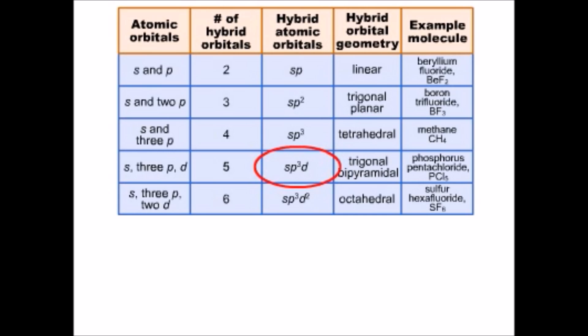Valence orbitals that are SP3D hybridized are arranged in a trigonal bipyramid, as in the phosphorus atom and phosphorus pentachloride.